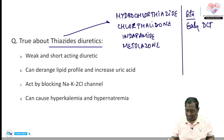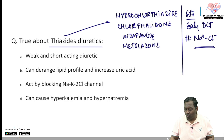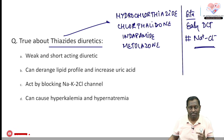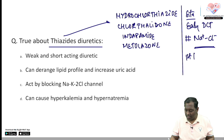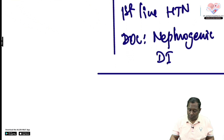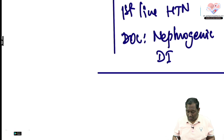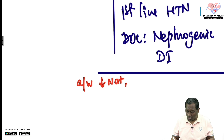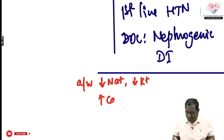Thiazide diuretics are the first-line drug of choice in hypertension. They are also the drug of choice in nephrogenic diabetes insipidus. Remember, whenever you use diuretics there will be loss of sodium and water, and they are associated with loss of potassium. However, they inhibit calcium excretion, so the level of calcium will be high.